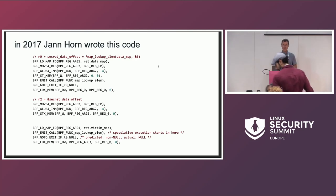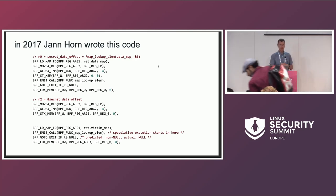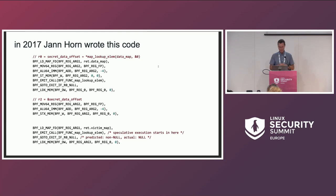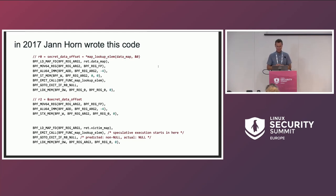All was fine for the first couple years of BPF's existence, until in 2017, Jan Horn from Project Zero wrote this bit of code. Anyone remember this? It's actually a snippet — he used three BPF programs as part of his exploit. This is the most interesting one, since it's actually doing the work of preparing the code for speculative execution. For those who had fun back during Christmas of 2017, this eventually became known as Spectre V1 — the bounds check bypass attack.